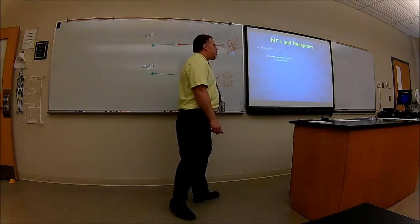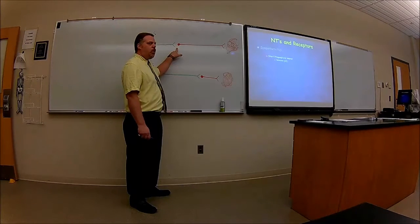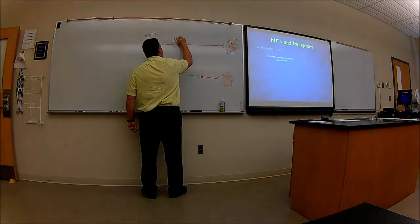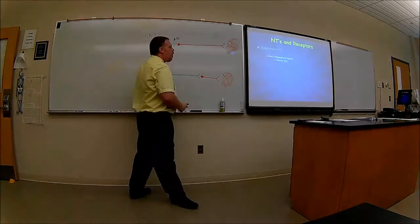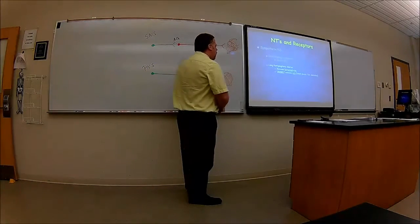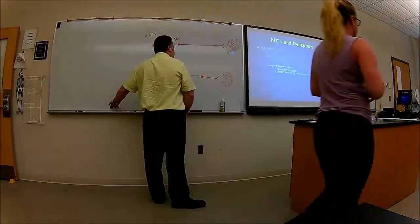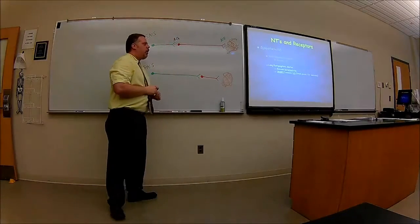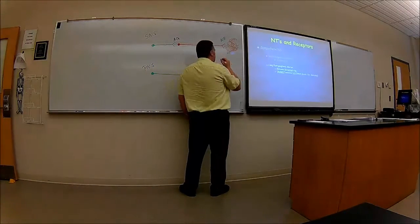In the sympathetic nervous system, the short pre-ganglionic neuron is going to release acetylcholine — always, always, always. The long post-ganglionic neuron synapses with a target organ and releases norepinephrine. However, it can release acetylcholine when dealing with sweat glands and external genitalia.